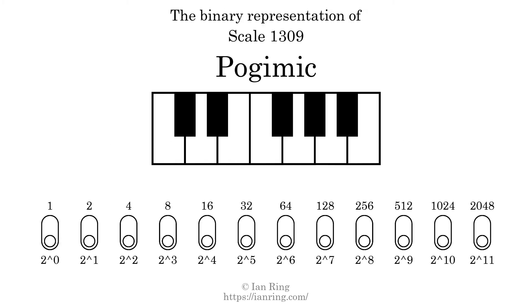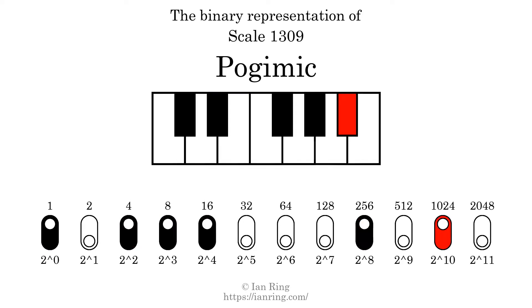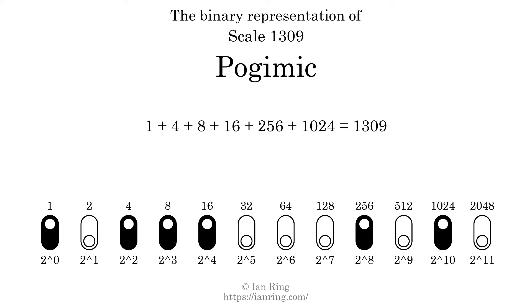The binary representation of this scale is determined by mapping tones of the scale to binary digits. Each binary digit represents a power of 2. To get the scale number, we add the powers of 2 together. The powers of 2 that are present in the scale, all added together, equals 1309.